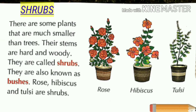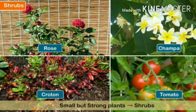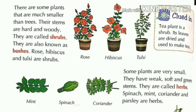Next is the shrub. There are some plants that are much smaller than trees. Their stems are hard and woody. They are called shrubs, also known as bushes. Rose, hibiscus, and tulsi are shrubs. Some more examples are rose, champa, croton, and tomato. All these plants have woody stems. They are small but strong plants, and that is why they are known as shrubs.